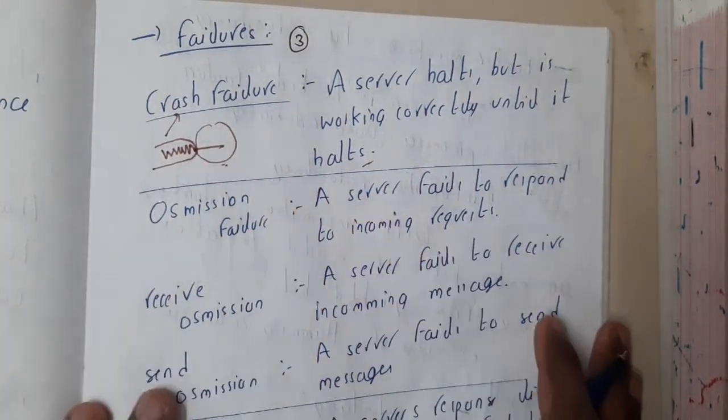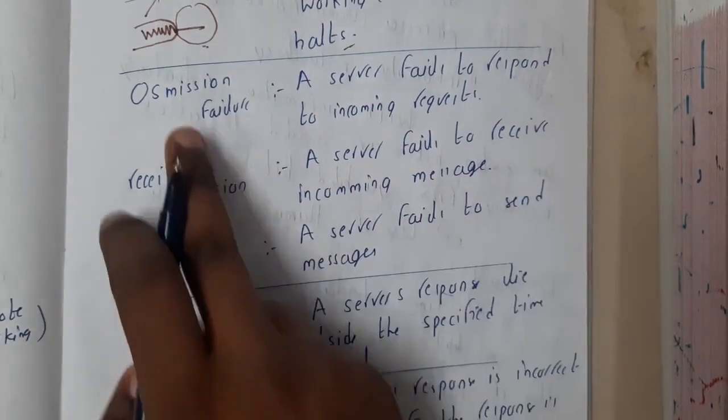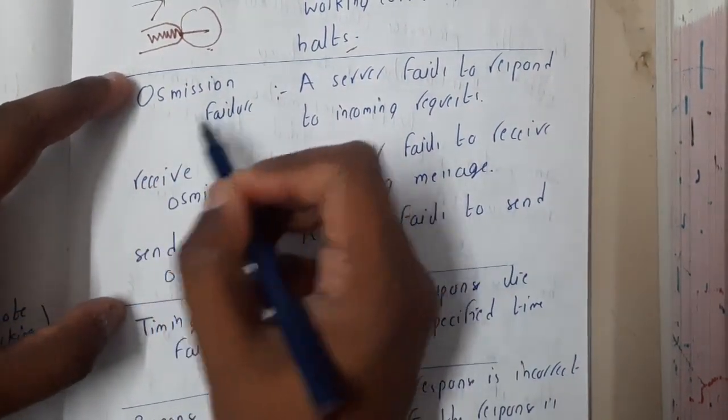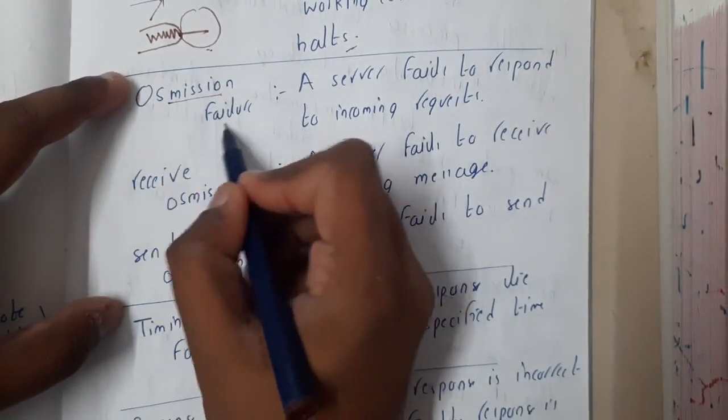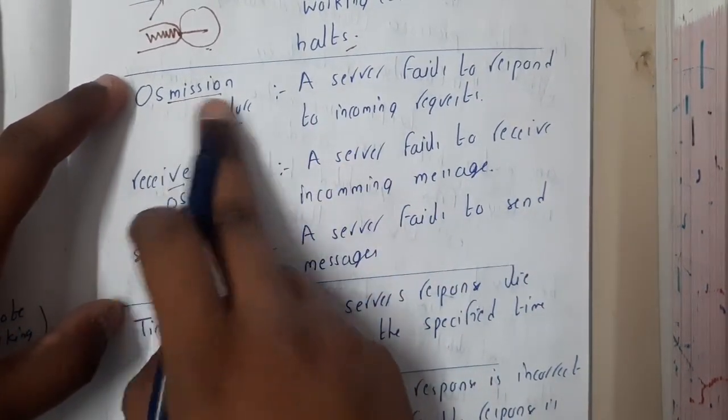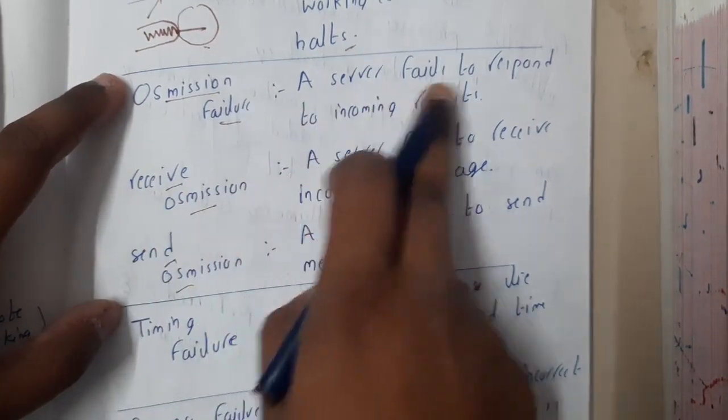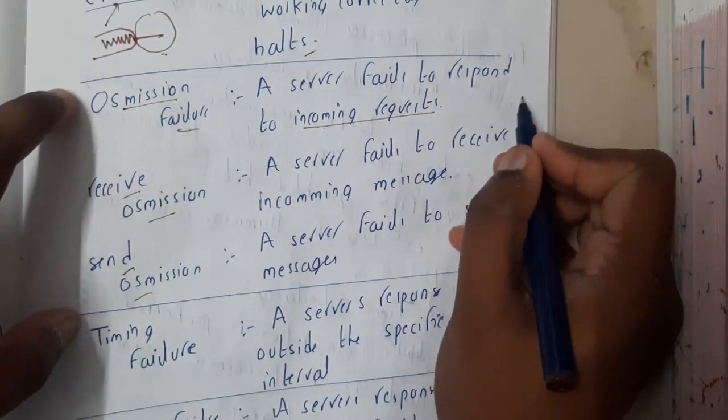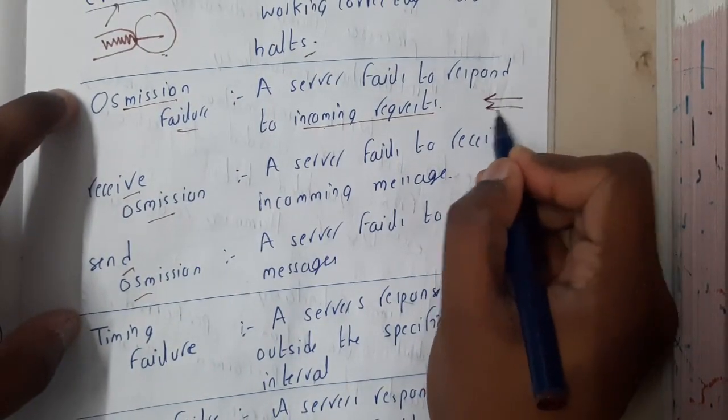Similarly, omission failure. Please remember these words, because there are three words with omission: omission failure, receive omission, and send omission failure. Omission failure means a server fails to respond to incoming requests. So whenever there is an issue with incoming requests, you can say that it is omission failure.